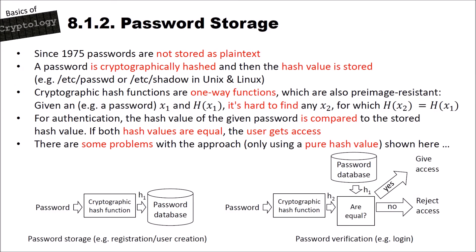Since 1975, passwords are not stored as plain text anymore. Passwords are cryptographically hashed and then the hash value is stored — for instance in the Linux/Unix etc/password or etc/shadow file. Cryptographic hash functions are one-way functions which are pre-image resistant. That means given x1 and the hash of x1 — where x1 is a password — it is hard to find any x2 for which the hash of x2 equals the hash of x1.